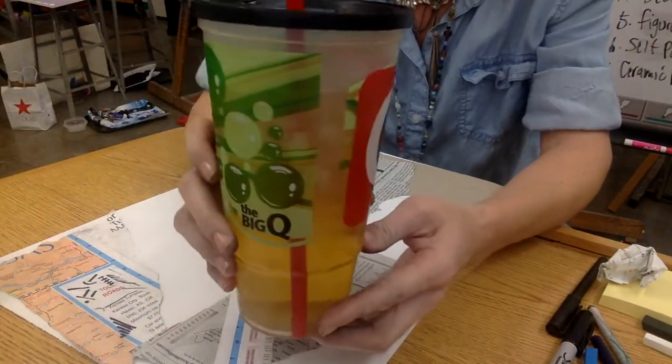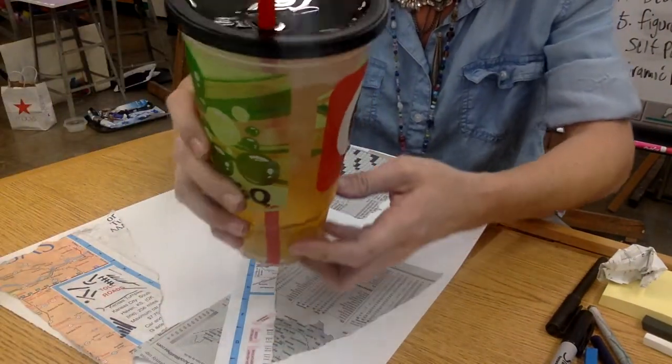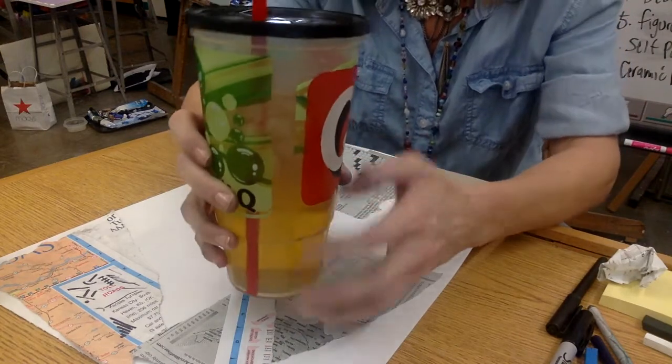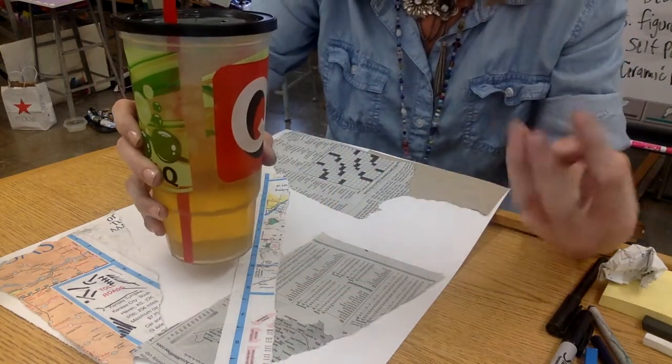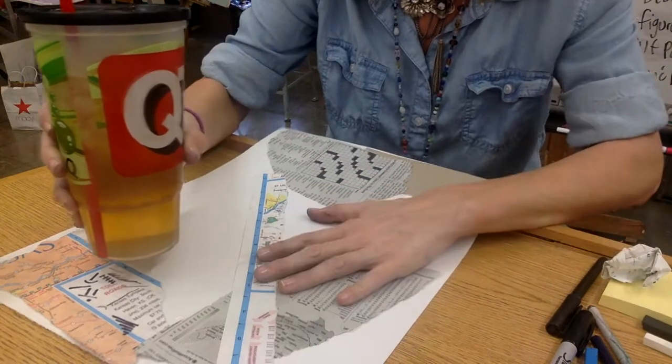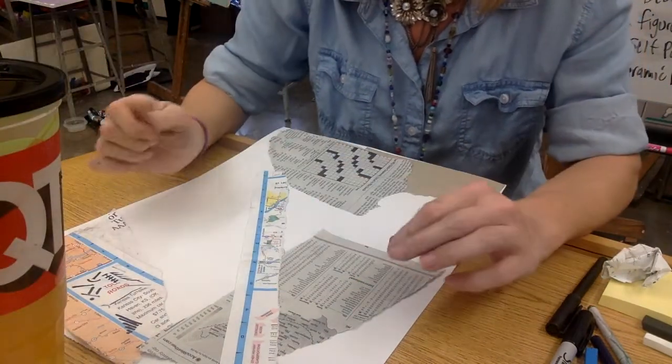This can be a frontal view, it can be a view from the top, it can be a view from the bottom, or it can be different sizes. I want you to have three different views on this page overlapping in some interesting way.